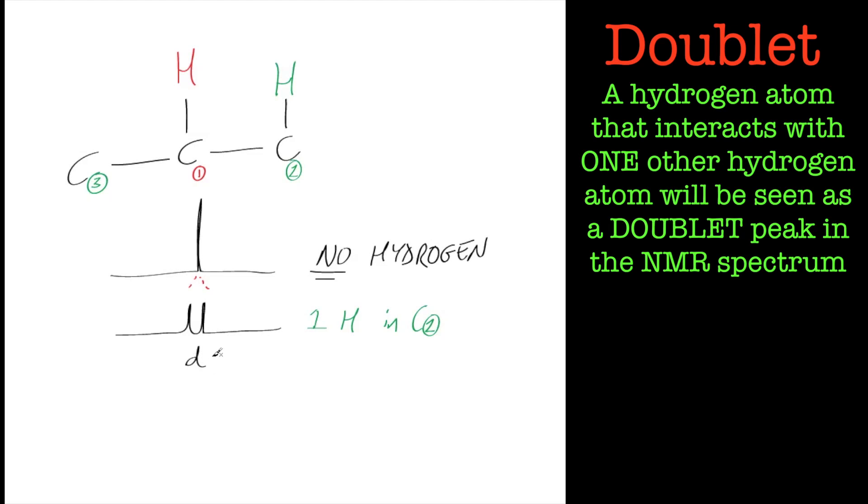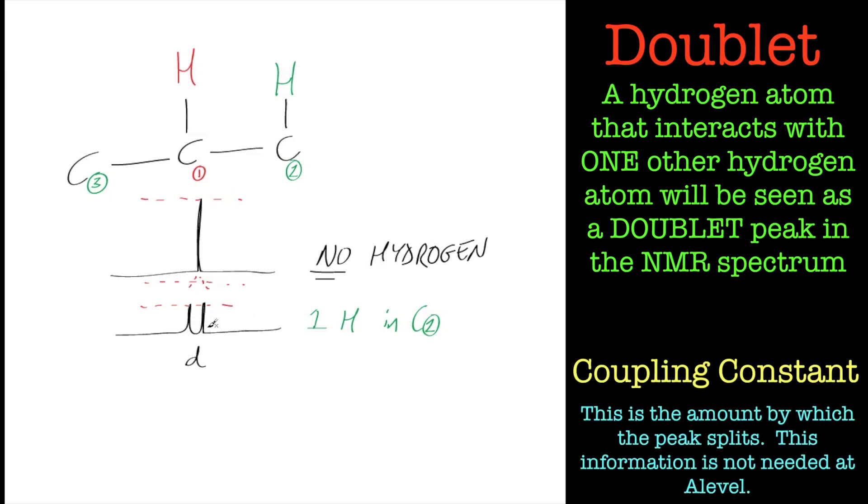And when it splits, the height of this signal, this initial signal, divides into two, because the whole of the area of that signal has to occupy these two signals. These two signals are actually the same hydrogen atom. So you get a splitting, and we call that splitting a doublet. So that's what happens when we have one hydrogen in position two. And we use the symbol D to denote it's a doublet. Now this value is really important, and we call that the coupling constant.